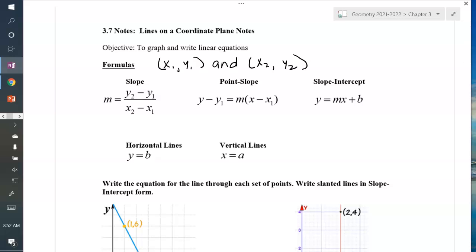Point slope form, that's where if you know the slope and you know one point, you put the slope in right here, and then the x and y values of the point go in x1 and y1. And that lets you write one form of the equation of the line.